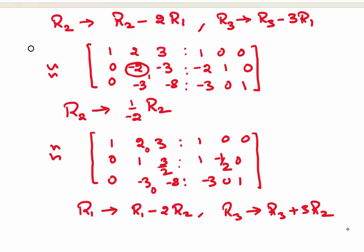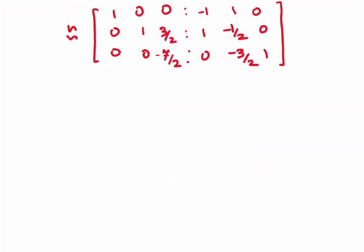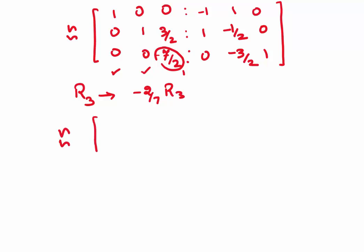In this transformation on the second column, the reference point is the pivot of the second row. On doing these transformations we get the equivalent matrix. The first and second columns are now ready. For the third column, the pivot is −7/2, and we need to make it 1. We take the transformation R3 → (−2/7)R3 and apply it.